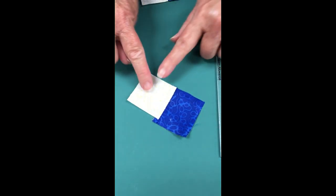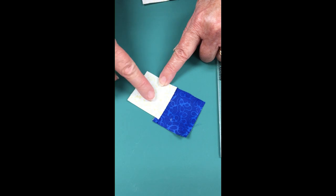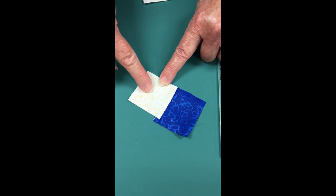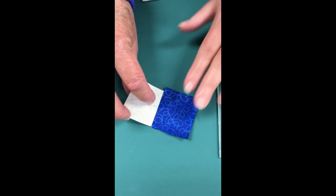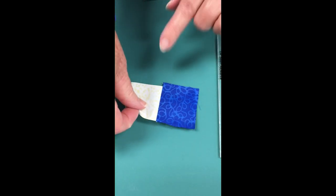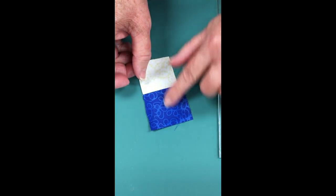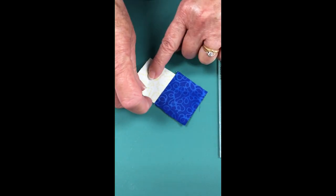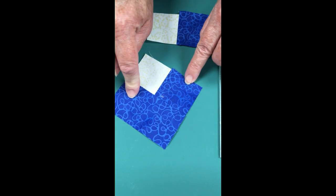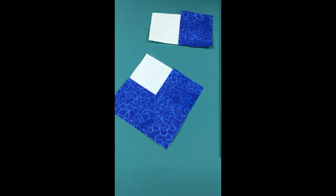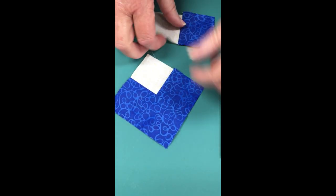When you press, press toward the line you added, always pressing away from your center square. Add your fabric in a clockwise direction. I added my first log and my second log—my first two logs were wide, and my next two logs will be skinny.